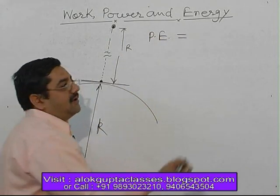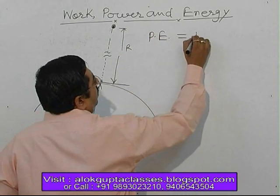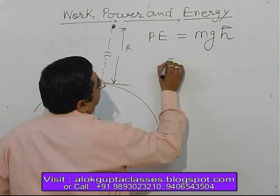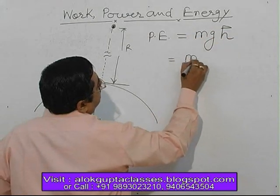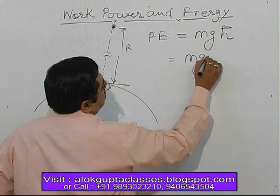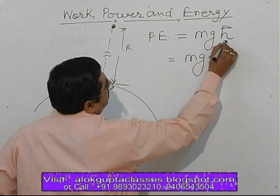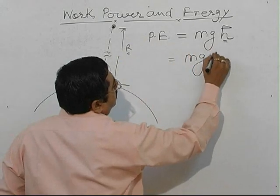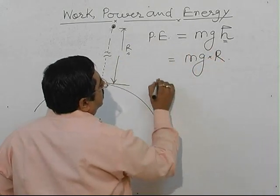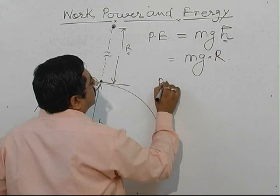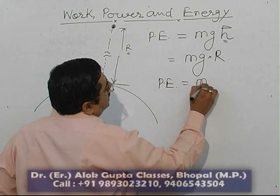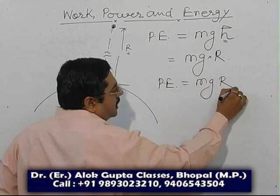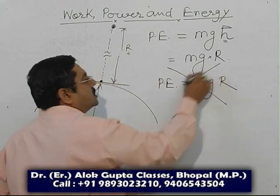So, it seems simple. The formula of potential energy is mgh. Here m is the mass, g is acceleration, and height is r. So the gain in potential energy appears to be mgr. But this is wrong — this is not the answer.